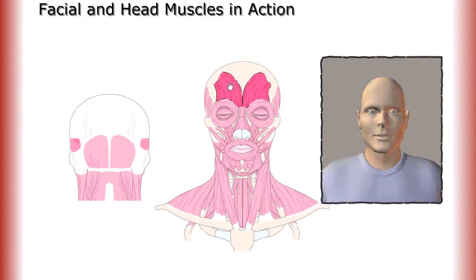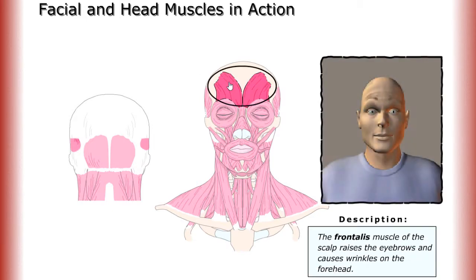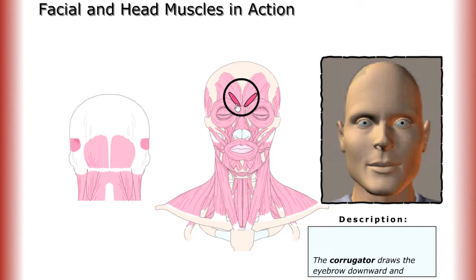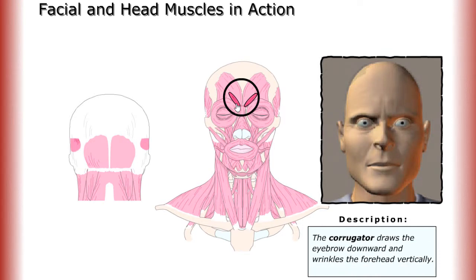The frontalis muscle of the scalp raises the eyebrows and causes wrinkles on the forehead. The corrugator draws the eyebrow downward and wrinkles the forehead vertically.